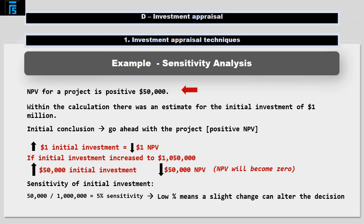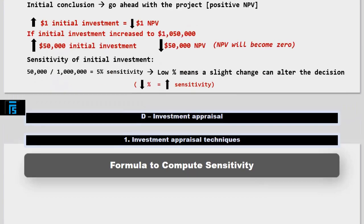A lower percentage sensitivity means that only a relatively small movement in the value of that variable will change the decision. In other words, a lower percentage means we are very sensitive to that variable.